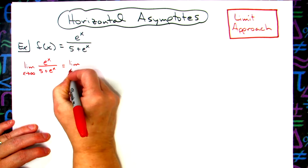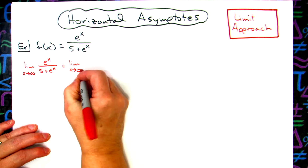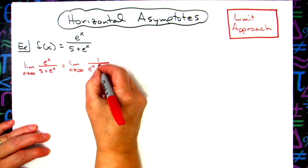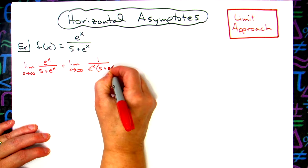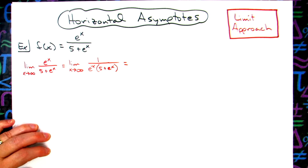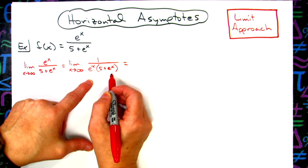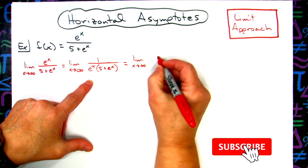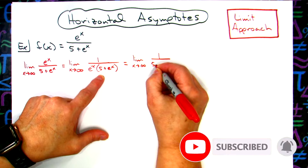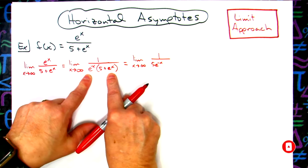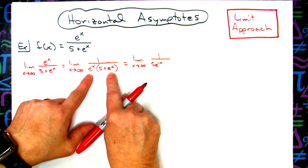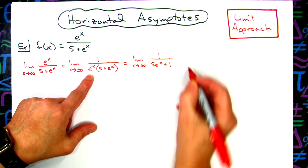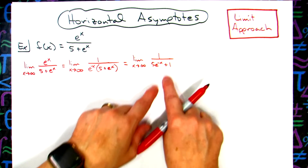So we'll have the limit as x approaches infinity with a 1 on top, and e to the negative x — because I moved that down — times the 5 plus e to the x. Now I'm going to distribute that e to the negative x, giving us 1 over 5e to the negative x. When we multiply e to the negative x times e to the x, that gives us e to the 0, which is 1. Just doing some algebra manipulation to make this a little bit easier.